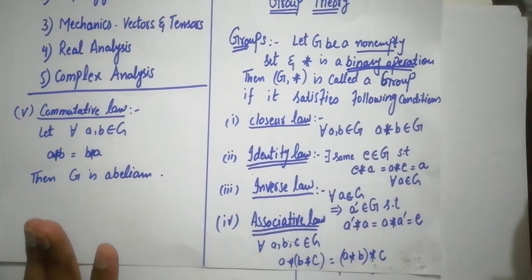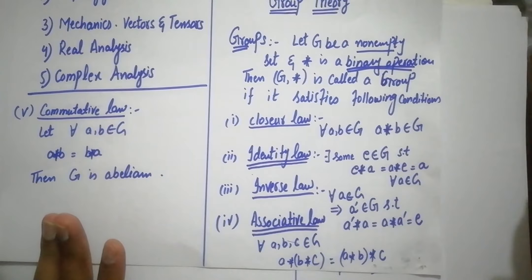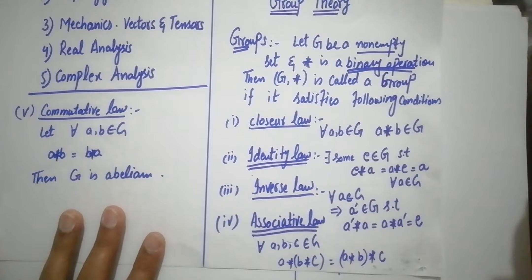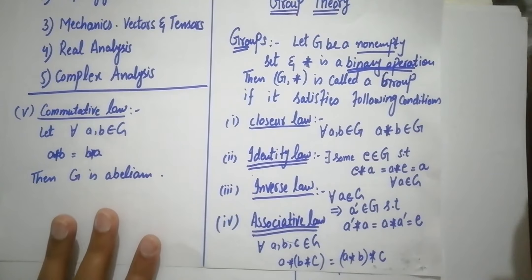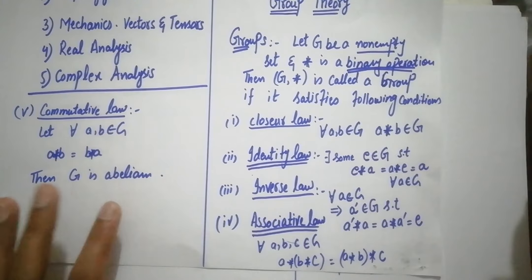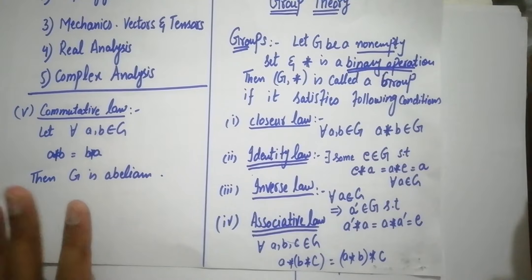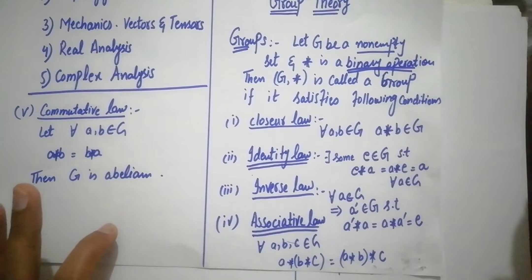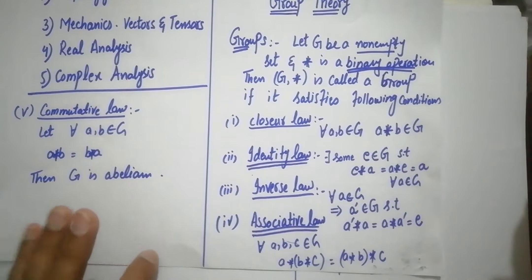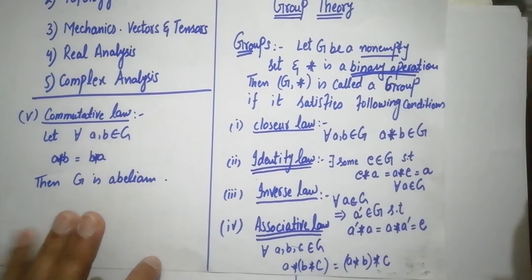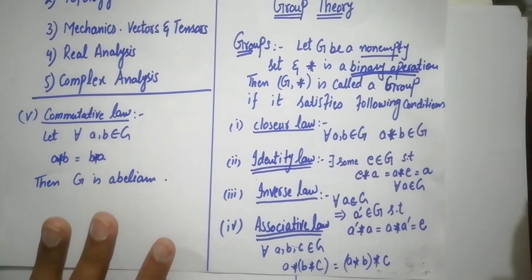Additionally, you have the commutative property, but this property is not in every group. If a group has the commutative property, it will be called an Abelian group, or commutative group. Otherwise, it will be a simple group.